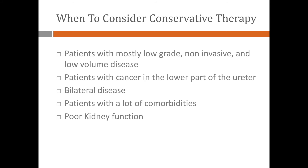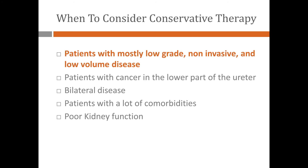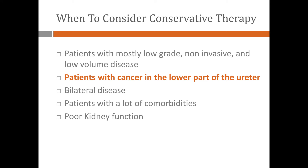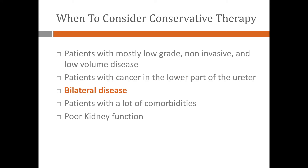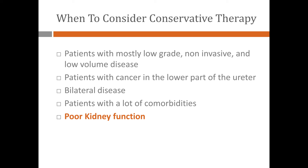When do we consider conservative therapy? Mostly for patients with low-grade disease, non-invasive disease, and low-volume disease — and patients who have disease at the lower part of the ureter. Sometimes, although rare, disease can happen on both sides, and because we don't want to lose both kidneys, we do our best to do conservative treatment. Some patients cannot tolerate major surgery to remove the kidney, and patients with a lot of medical problems or poor kidney function also tend to receive more conservative therapy.